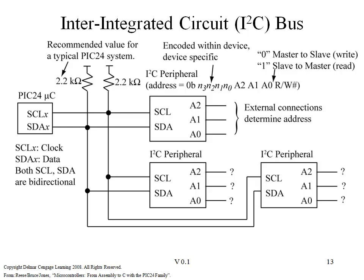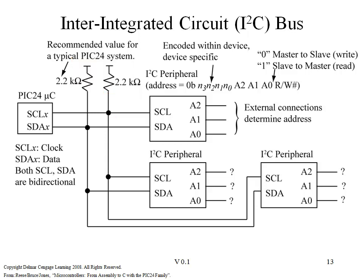For the bus to work, we need to make two specific connections. The serial clock line, SCL, needs to be connected to the SCL on each I2C peripheral on the bus. In addition, it's essential that pull-up resistors — one for the serial clock line and one for the serial data line — be included in the design because of the nature of I2C. It's fundamentally an open collector bus.